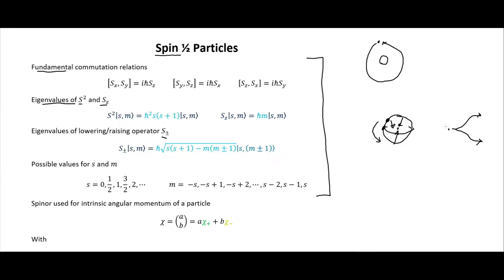We talk about these particles as 'spinning' because the way they behave is as if they are spinning. A particle will bend in a magnetic field — similar to how in ping pong, if you pull on the paddle while hitting the ball, you give it spin that causes it to arc in the air. That's why it's called spin. Anyway, we can still use the same results from the previous video on orbital angular momentum, including the eigenvalues for S-squared.